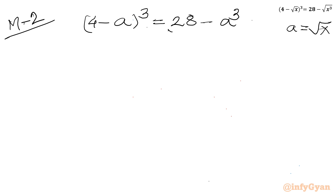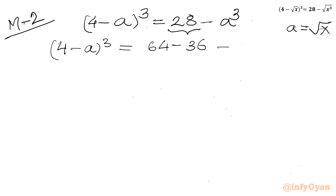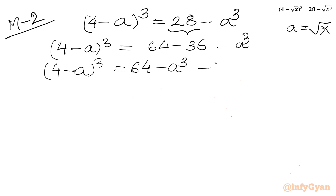Now I will use algebraic manipulation. I notice 28 = 64 - 36, so I rewrite the right-hand side: (4 - a)³ = 64 - 36 - a³. This lets me write (4 - a)³ = (4³ - a³) - 36.